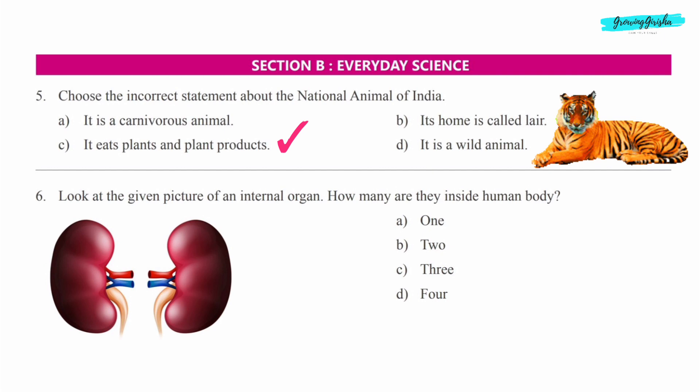Question 6: Look at the given picture of an internal organ. How many are there inside the human body? a) one, b) two, c) three, d) four.